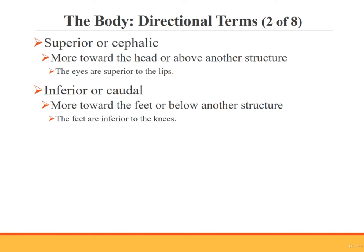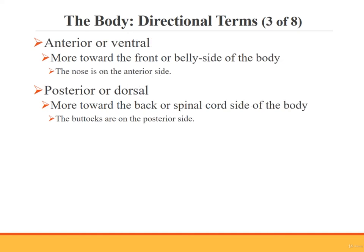Superior, or cephalic, means more toward the head — for example, the eyes are superior to the lips. Inferior, or caudal, means more toward the feet — for example, the feet are inferior to the knees. Anterior, or ventral, means more toward the front or belly side of the body — for example, the nose is on the anterior side. Posterior, or dorsal, means more toward the back or spinal cord side — for example, the buttocks are on the posterior side.